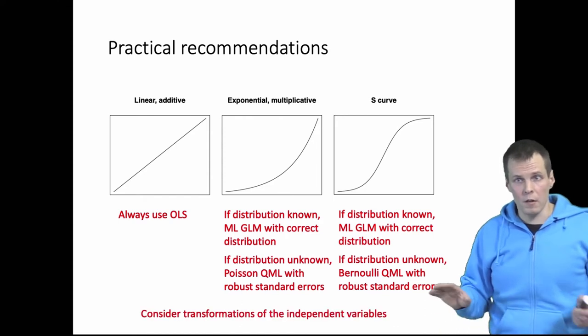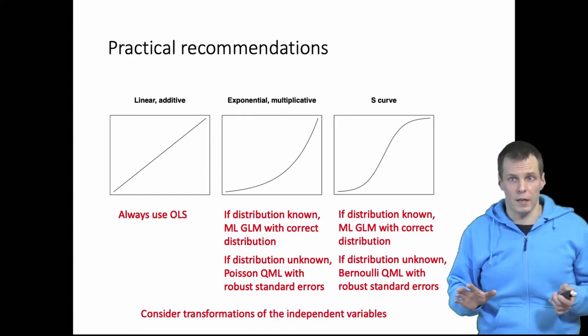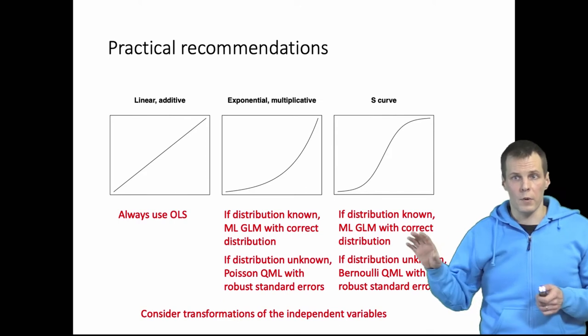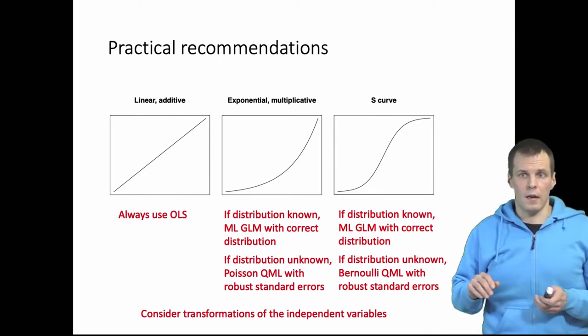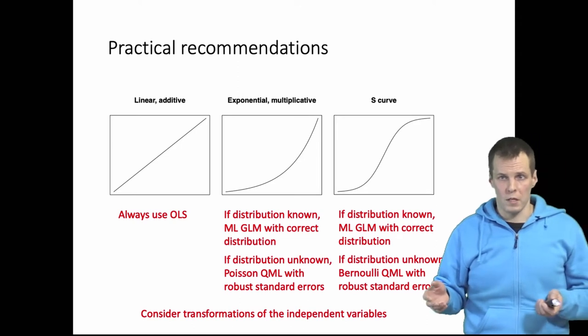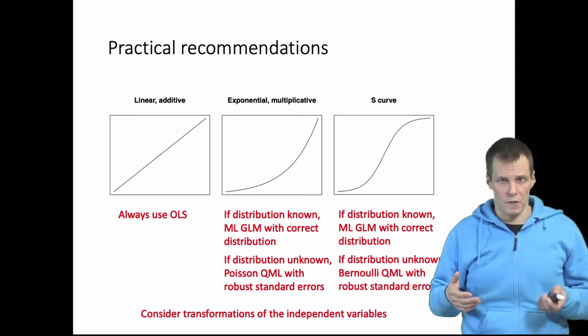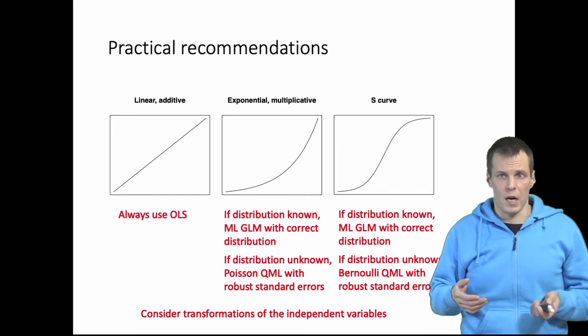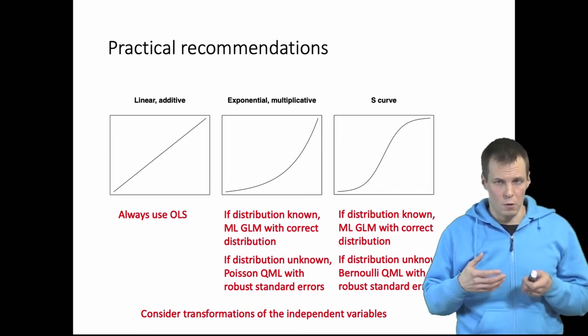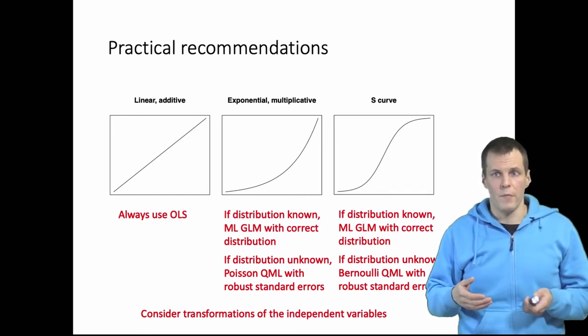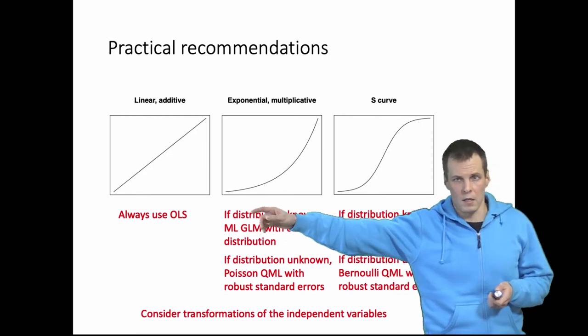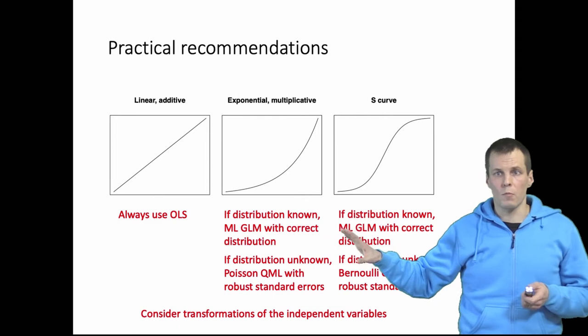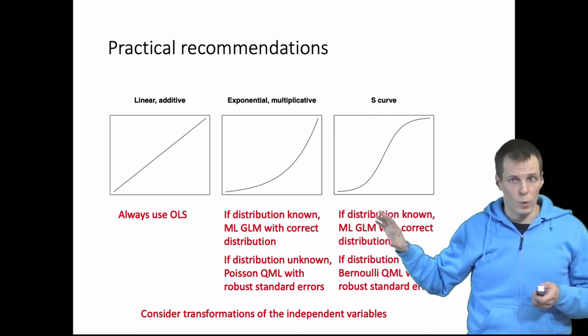Now this has nothing to do with the transformation of the independent variables. So this is about the dependent variable. Transforming independent variables is okay and you can consider the log transformation or sometimes even exponential transformation of the independent variables to get a model that you think explains your data well based on your theory and then you estimate it with either OLS or GLM. This is about what you do with the dependent variable.